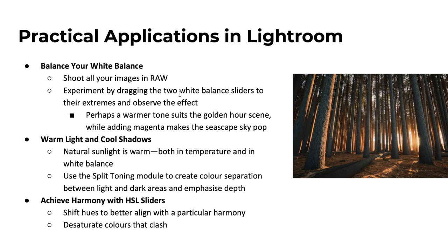First up — and this may be an obvious one — is to balance your white balance. So often I've seen photos with great composition and great light, but the white balance is just off and doesn't seem natural. Make sure you shoot all your images in RAW so you can adjust this in post-processing without degrading the image. Simply experiment by dragging those two white balance sliders — the temperature from blues to yellows and oranges, and the tint from green to magenta — and see the effect that has on your image. You might want to add a touch of magenta to a seascape sky to really make it pop.